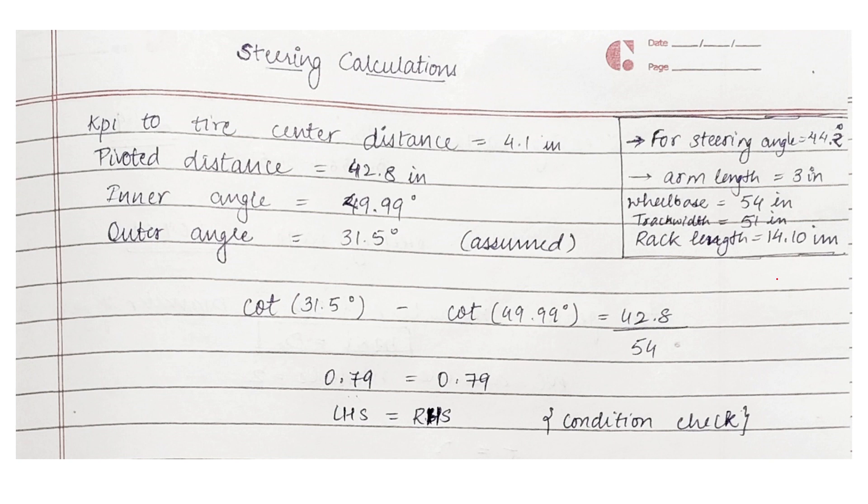We made certain assumptions like the steering arm, the length of the steering arm, the steering arm angle which came out to be 44.2 degrees as per our assumption. We assumed the inner angle to be 31.5 degrees and the wheelbase for the vehicle initially presumed as 54 inches and the track width to be 51 inches. Length of the rack to be 14.1 inches. Here you can see in the box the assumptions we have made.